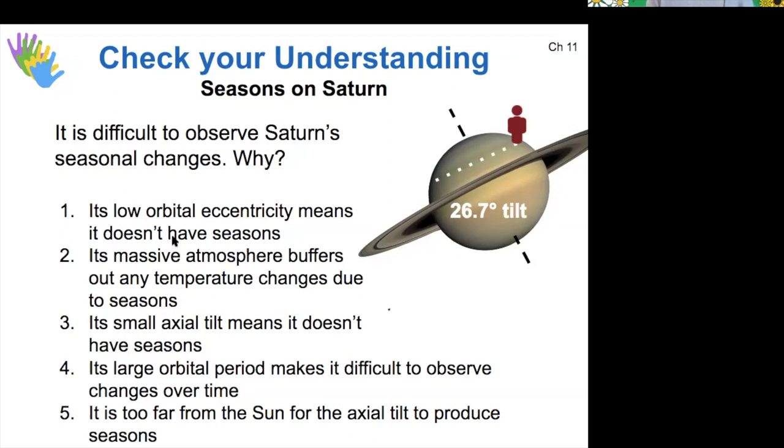All right. Yeah. So the eccentricity doesn't matter very much on Mars. The eccentricity serves to enhance its seasons compared to earth because it's closer to the sun at its summertime, unlike the earth, which has the opposite. It's closer to the sun in its winter time. Maybe there is some effect from the atmosphere buffering out temperature changes. That's plausible. But the primary factor here is that its orbital period is really long and that just makes it really hard to observe changes over time.